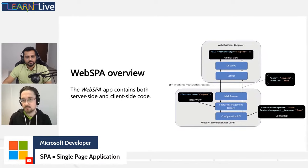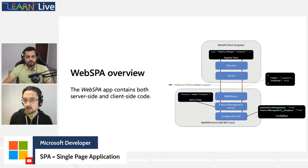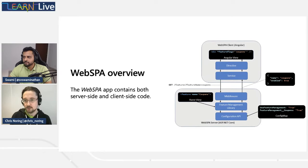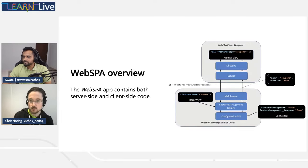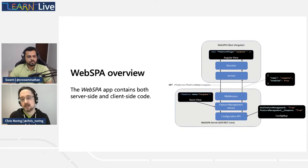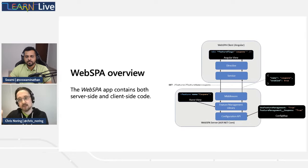As part of the configuration API, two entries will be added to the config map: "UseFeatureManagement: true" and "FeatureManagement__Coupons: true" — using double underscore for cross-platform Linux container compatibility. We will change the UI, the backend, and the Helm config.